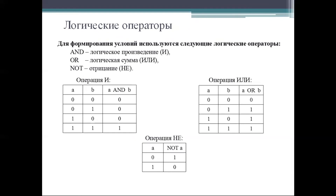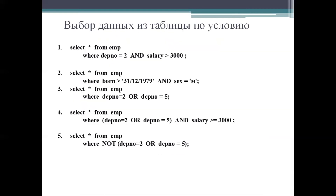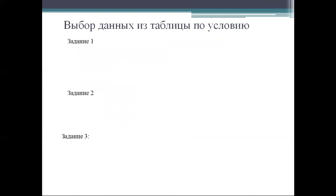Логические операторы для формирования условий: AND — логическое произведение «И», OR — логическая сумма «ИЛИ», NOT — отрицание «НЕ». Операция И, операция ИЛИ и операция НЕ. Выбор данных из таблицы по условию.